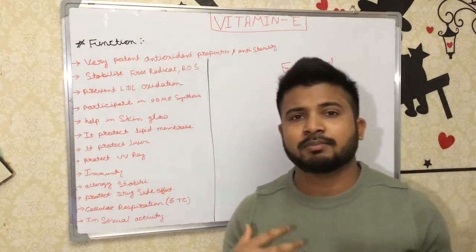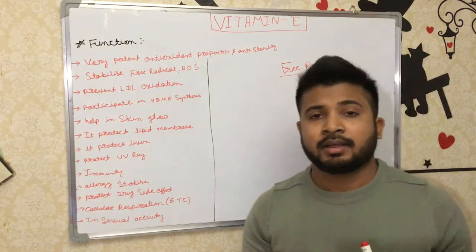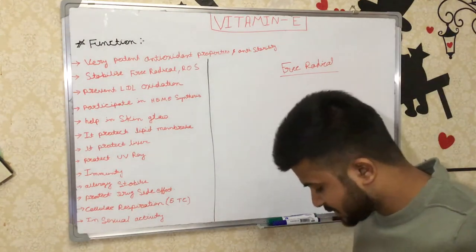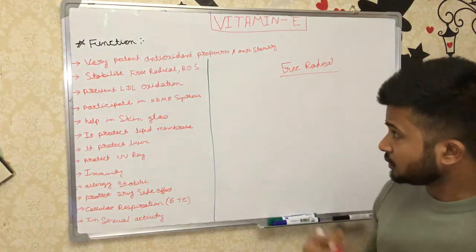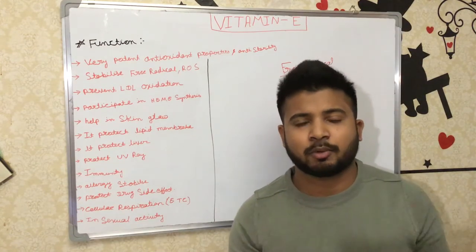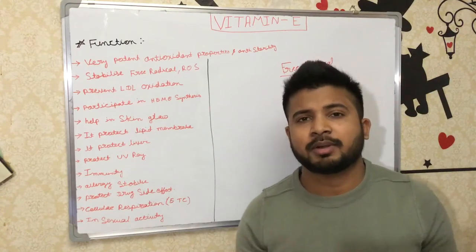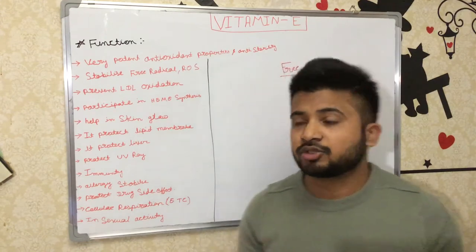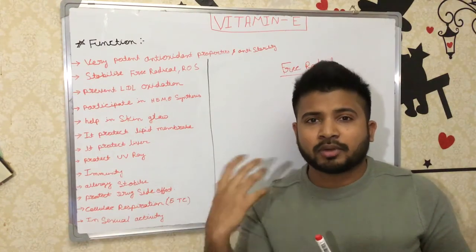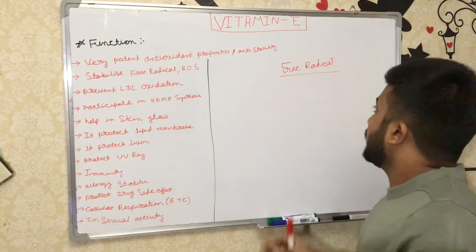But whenever free radicals increase in the body or reach very high concentrations, they become very toxic. They can damage the cell membrane, capture the DNA, and cause DNA dysfunction — very bad for the human body. Free radicals mainly increase due to external environmental factors like heavy pollution, heavy smoking, or toxic environmental exposures. Persons working in very polluted environments or who smoke heavily are most at risk of increased free radicals.